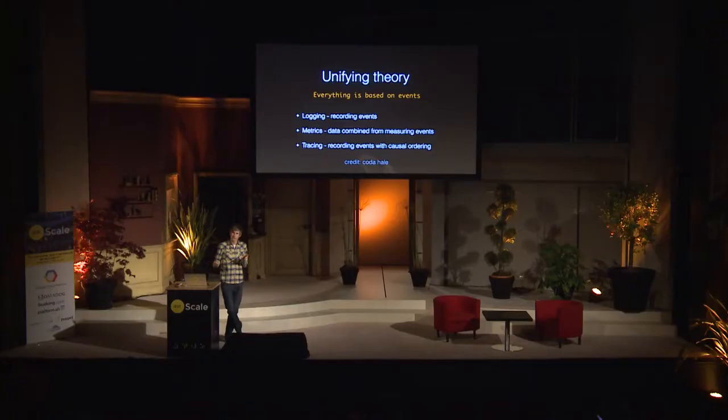Tracing, probably the more mystical of the three, is also event-based. But the key difference is there's causal ordering. So you'd be able to tell the impact of one request — did it spawn five other requests? Did a failure of that one cause an upstream request to fail? At the end of the day, they're all based on events, but they have different things to add when you're trying to understand your systems.